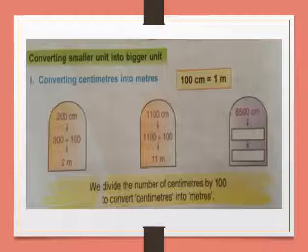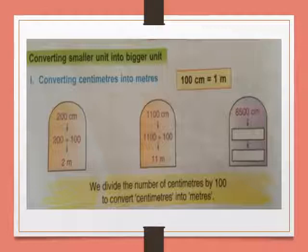Now, if 200 centimetres is given — just like 1 metre means 100 centimetres, 2 metres means 200 centimetres. So we are taking 200 centimetres and dividing it by 100. We get 2 metres. So 200 centimetres is equal to 2 metres.